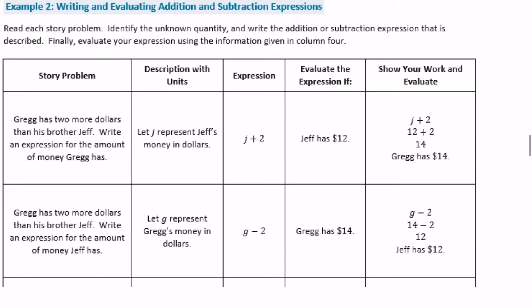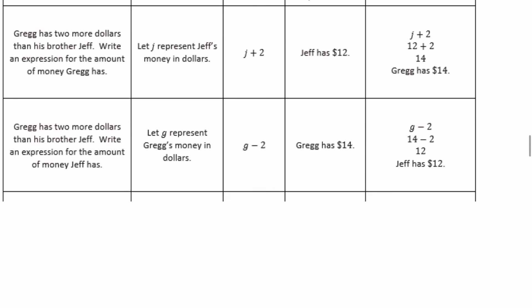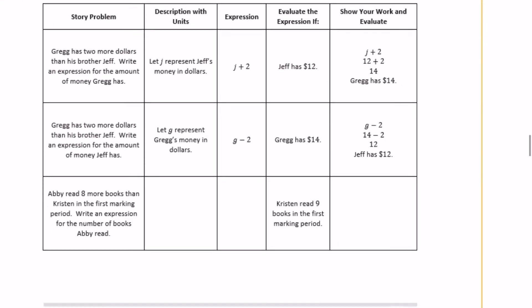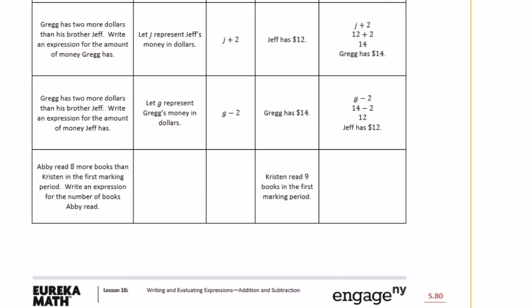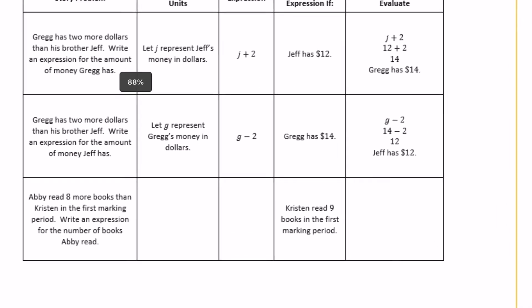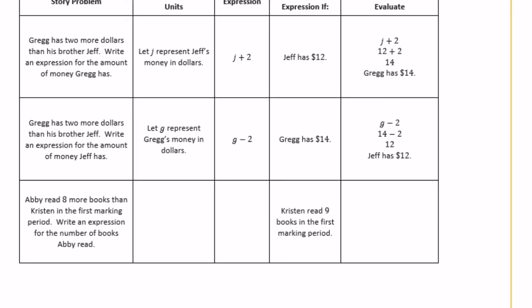Example 2: writing and evaluating addition and subtraction expressions. Read each story problem, identify the unknown quantity, and write the addition or subtraction expression described. Then evaluate using the information in column four. The first example: Greg has two more dollars than his brother Jeff. J represents Jeff's money in dollars; the expression is J plus 2. Evaluating when Jeff has $12: J plus 2 equals 12 plus 2, which equals $14.